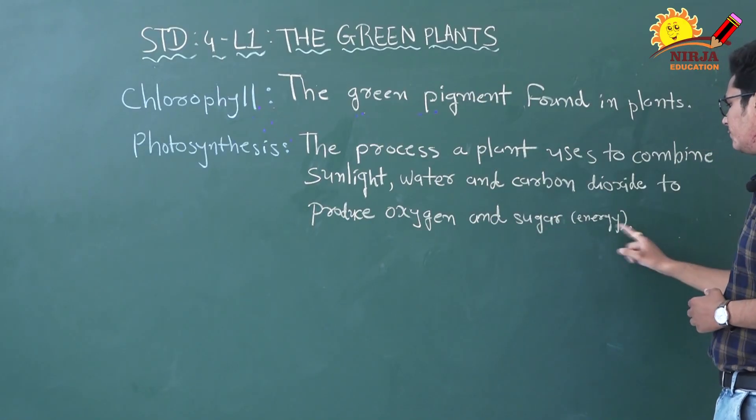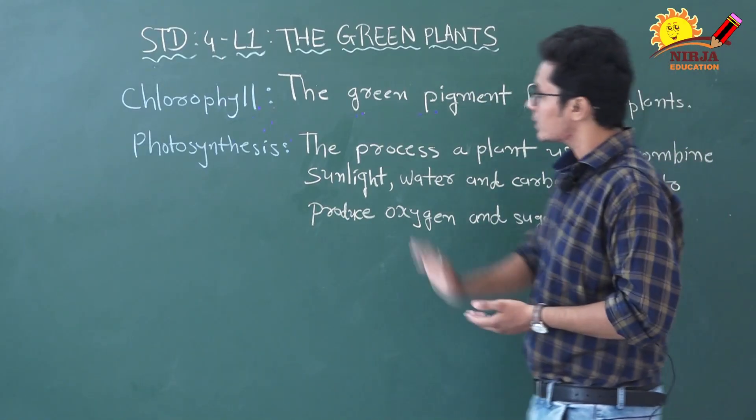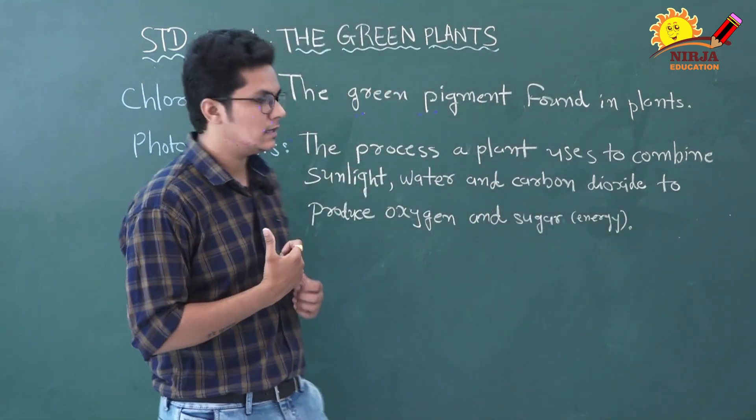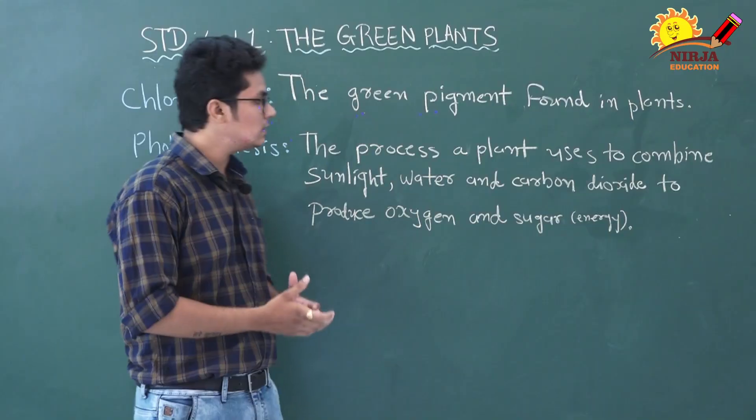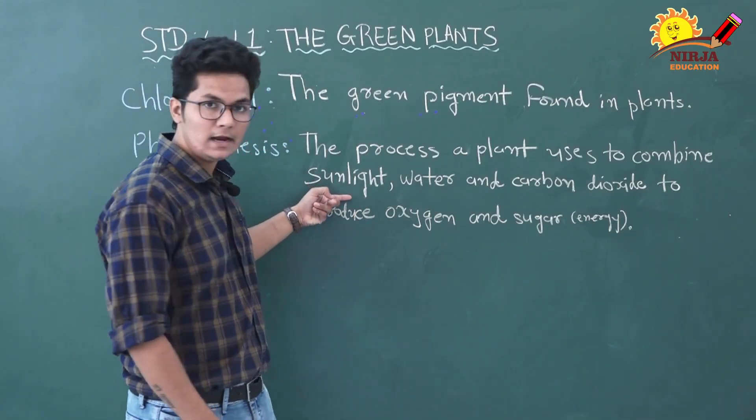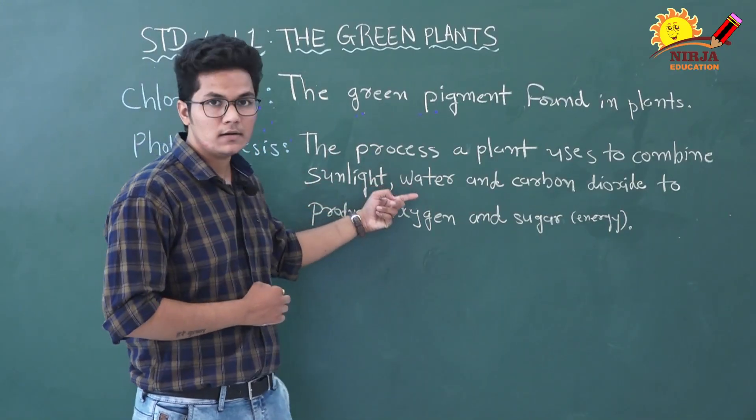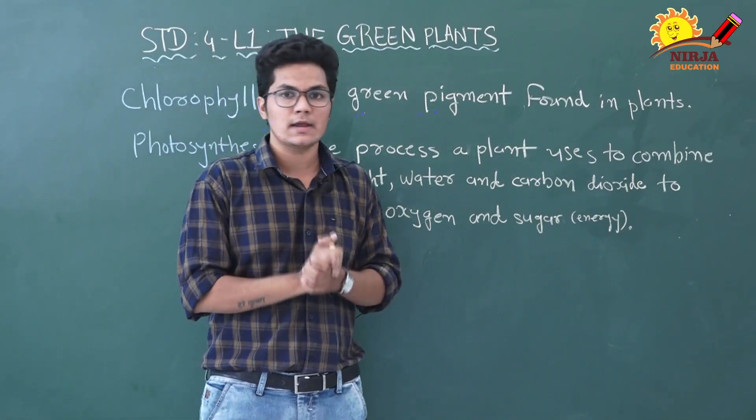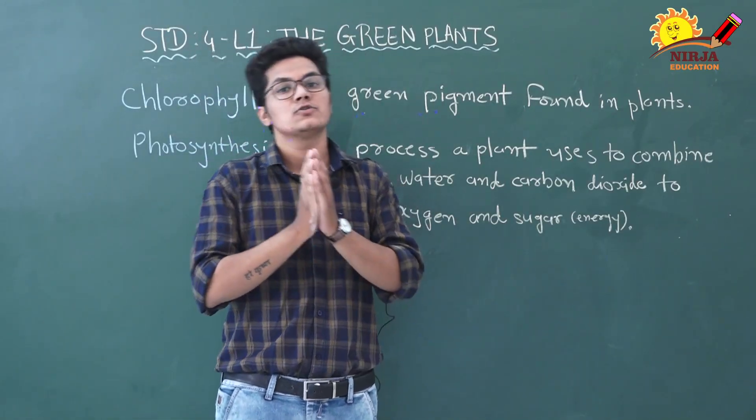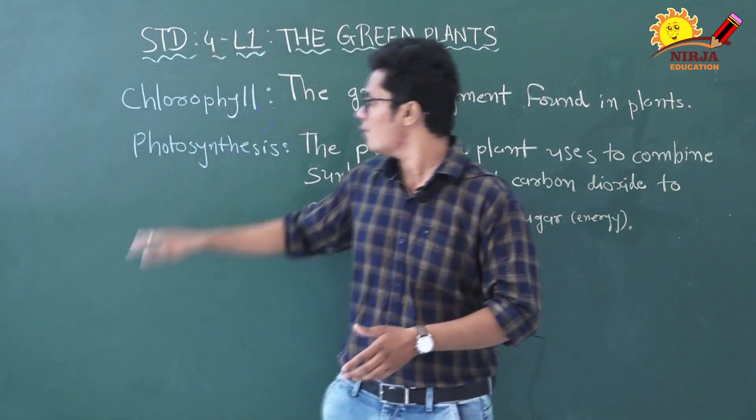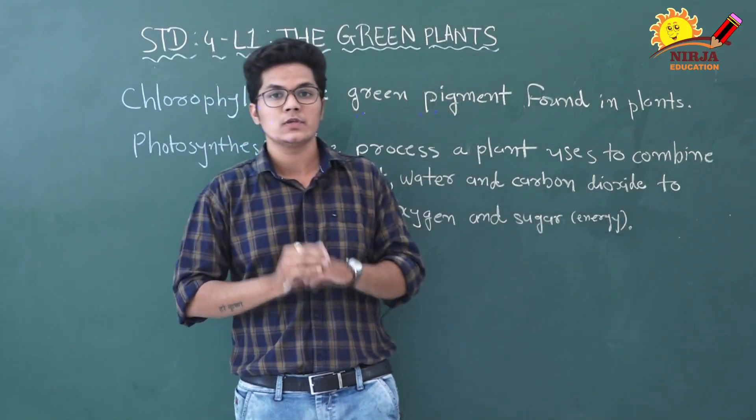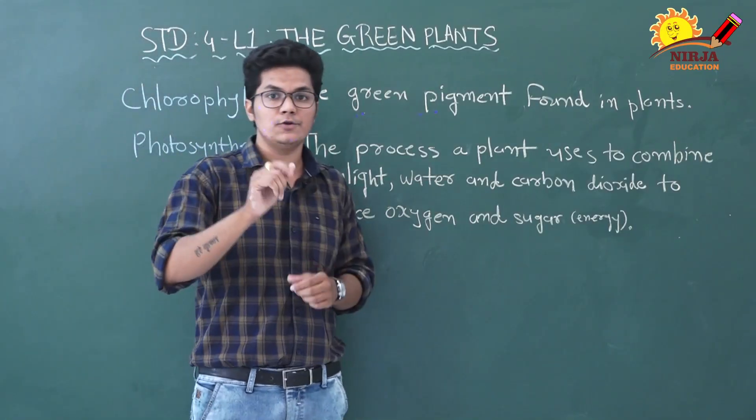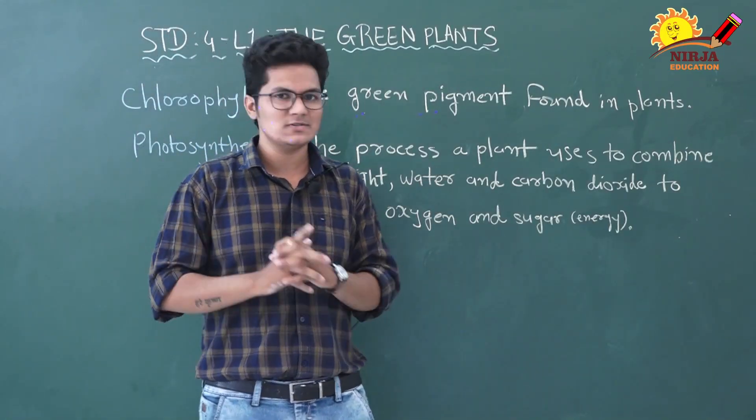Second is photosynthesis. The process a plant uses to combine sunlight, water, and carbon dioxide to produce oxygen and sugar, which is energy. This is the process by which plants make food. They use sunlight, water, and carbon dioxide. Using these three things, plants make their food. So this process is called photosynthesis.